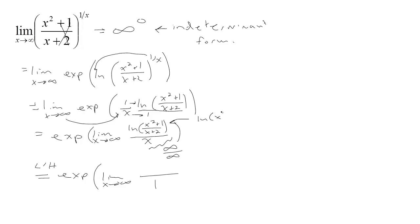We have a log of a quotient, so we have natural log of x squared plus 1 minus the natural log of x plus 2. So the derivative of this quantity would just be the difference of these two derivatives. So we have 2x over x squared plus 1 minus 1 over x plus 2.